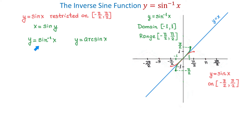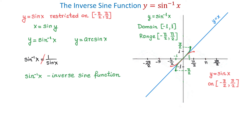Now let's talk more about the first notation. Note that this negative 1 is not an exponent, so it would be incorrect to write that inverse sine of x is the same as 1 over sine of x. Instead, this notation means the inverse sine function, whereas sine of x raised to the exponent negative 1 means 1 over sine of x. It is very important to distinguish between these two notations.